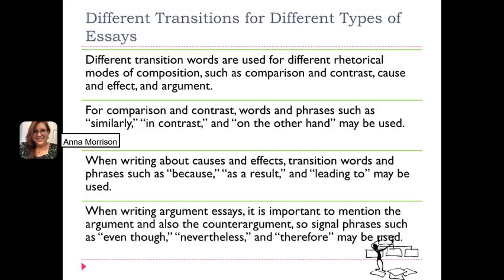We use different types of transitions for different types of essays. There are different rhetorical modes that we use in composition — that's just a fancy way of saying essay type — like comparison and contrast, cause and effect, or argument. When we write comparison and contrast, we use transition words and phrases like similarly, in contrast, and on the other hand. When writing about cause and effect, we would use transition words like because, or phrases like as a result or leading to, in order to explain how our thoughts are related to each other.